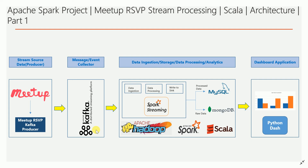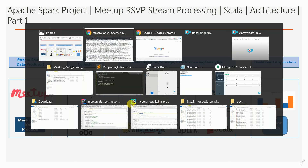Once you receive the JSON message from the Kafka broker — and if you are not aware of Apache Kafka, I have a separate playlist you can watch — once you receive the RSVP message, I am going to do some aggregation, processing, and transformation on it. First you need to parse the data because the JSON structure is different.